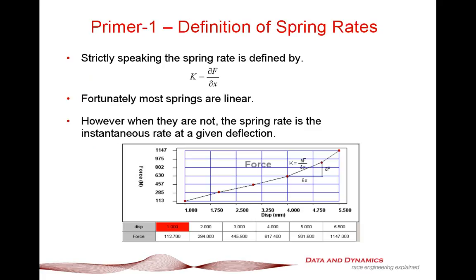First things first, let's talk about spring rates. A spring rate is basically the change in spring force over a given linear distance. This applies for a standard coilover damper unit, it applies for an air spring, and so on. As you can see in the graph, we're simply looking at the change in slope of force over displacement — that is our spring rate, and that's a really key concept. Fortunately, in most springs you'll deal with, they're actually linear, so our curve is effectively a straight line.